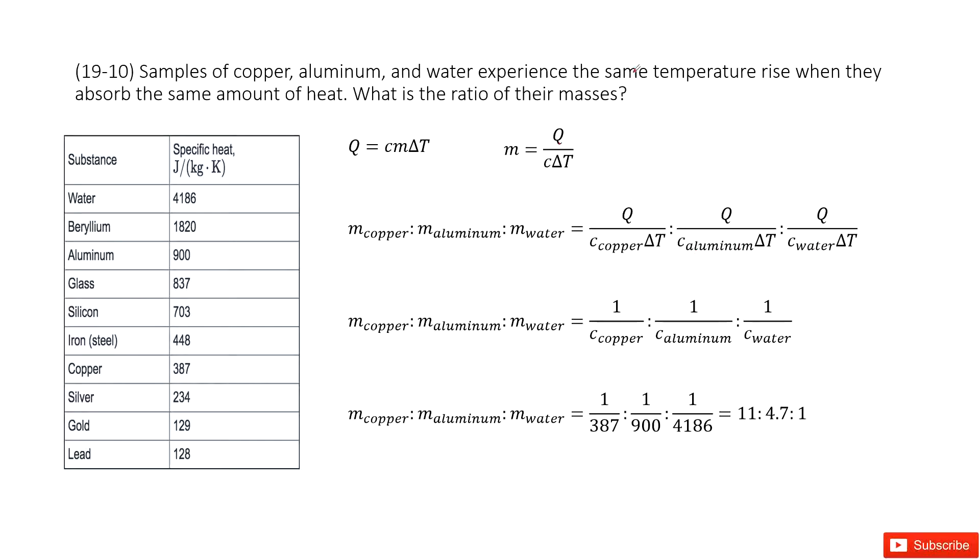See, it tells us for the same temperature rise, the same temperature difference, the heat is the same. So we can see Q and ΔT cancel out. So we can clean it, it can be simplified as this one.